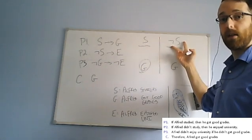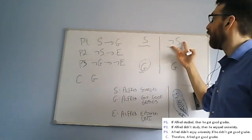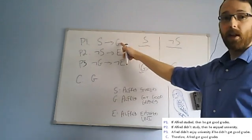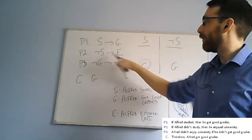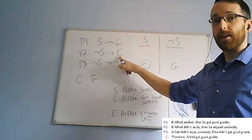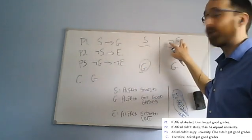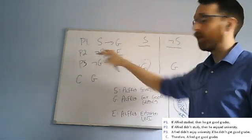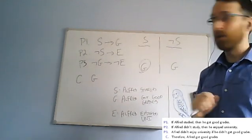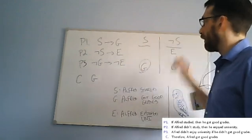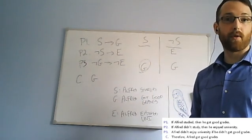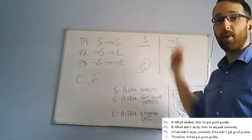Assume he didn't study. Well, premise one doesn't tell me anything about this case, but premise two does. Here we have, again, a conditional sentence, if not S, then E. And I'm assuming that the antecedent of that conditional is true. So putting these two things together, I know he must have enjoyed university, because that's what premise two tells me about this case.